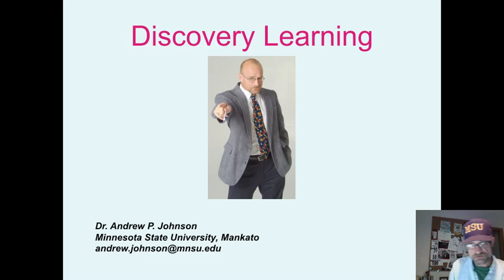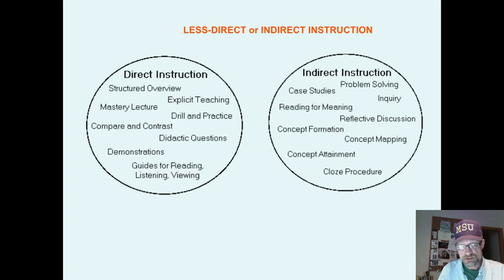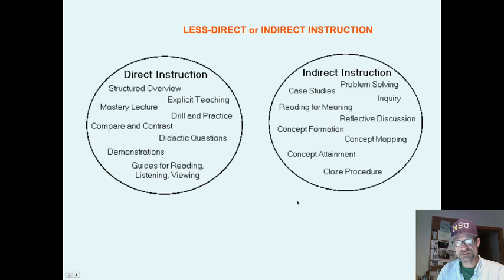This is part one of a three-part video on what discovery learning is. There are two forms of instruction — these are overriding, superordinate categories: direct instruction, with some examples, and then indirect, or what I call less direct instruction, with its own examples.